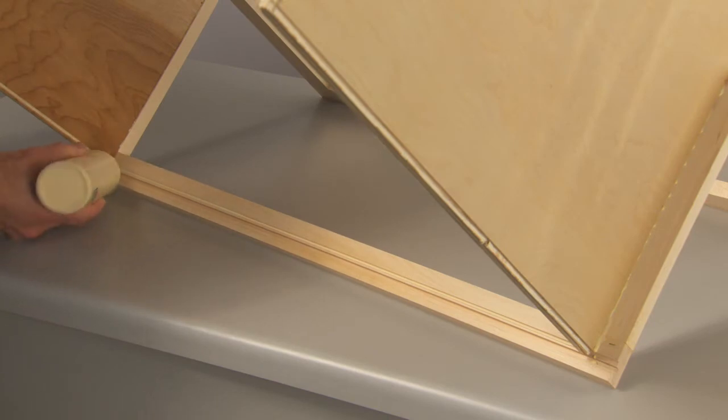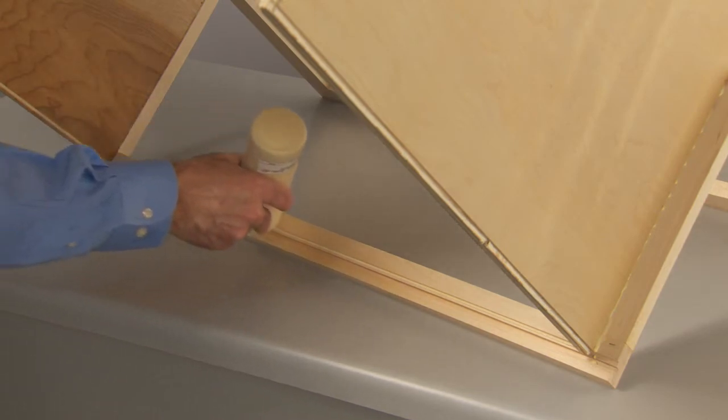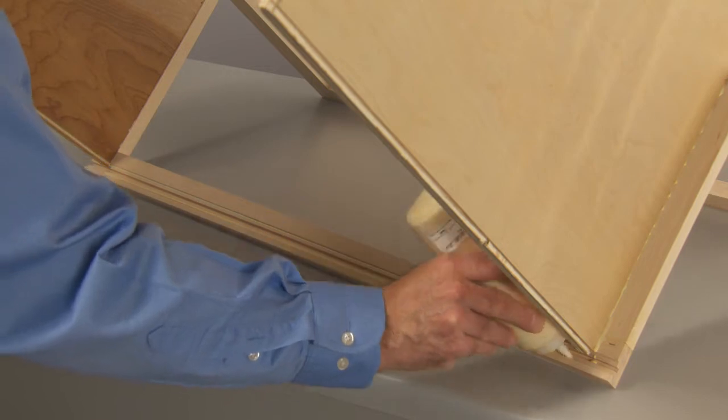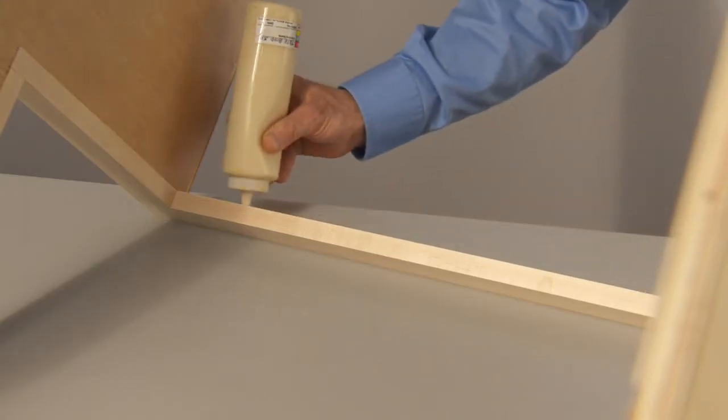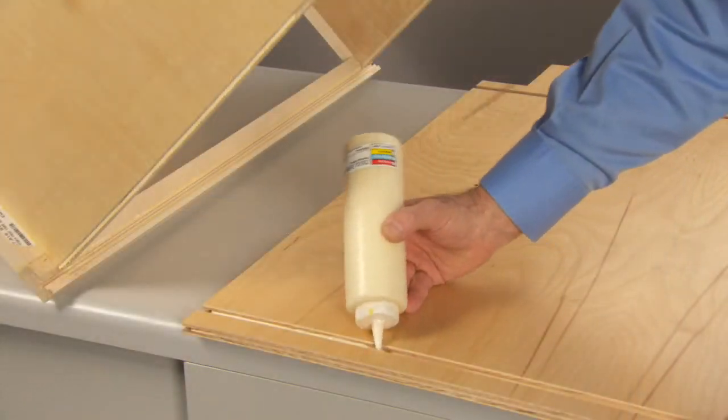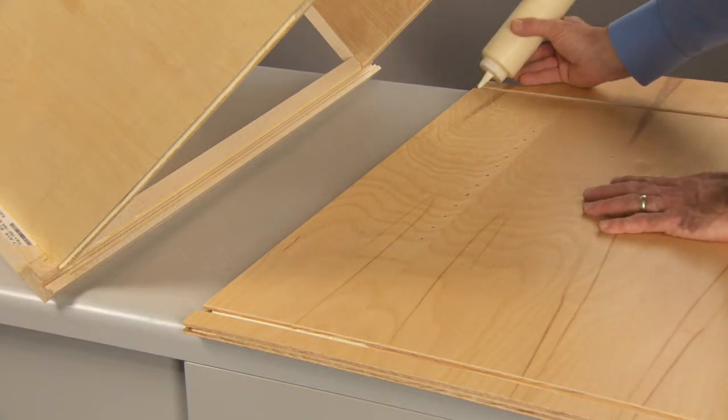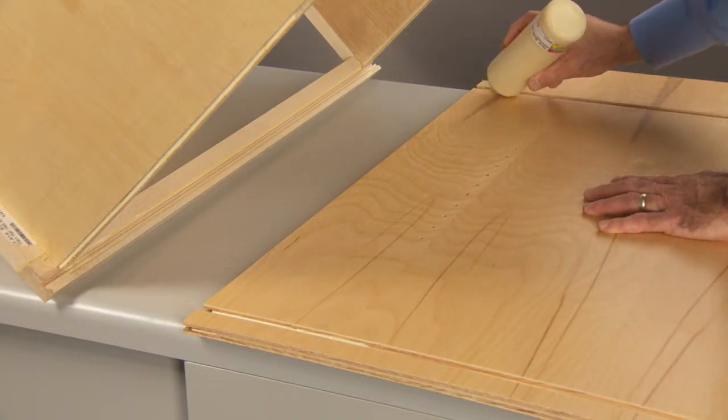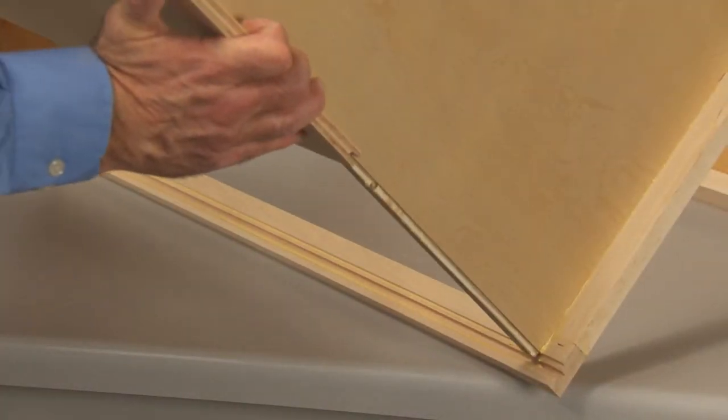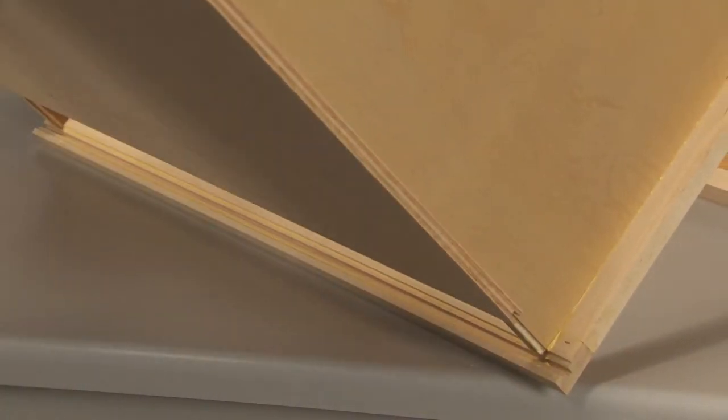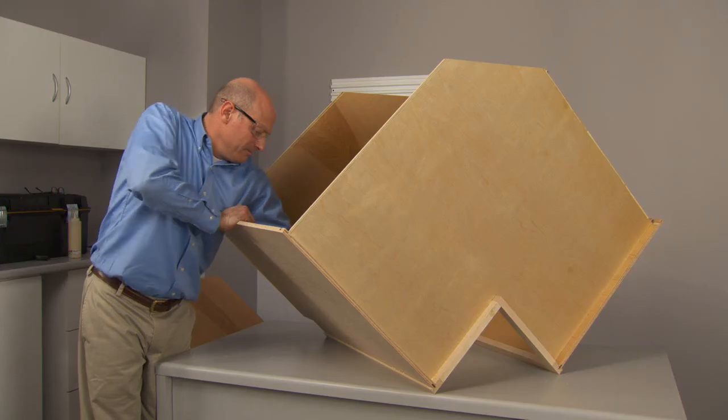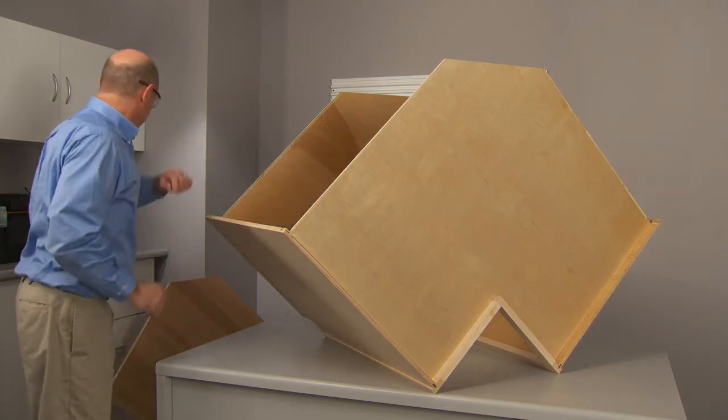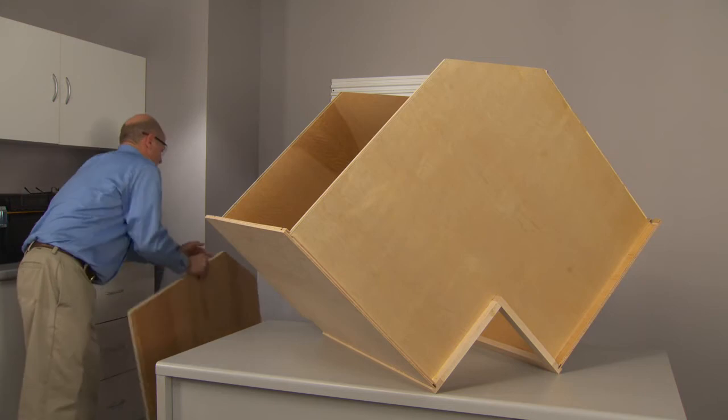Apply glue to both sides of the spline grooves in the styles of the front frames. You'll also apply glue to the female dovetails of the sides. Slide the sides onto the male dovetails of the top and bottom. The splines in the sides will seat securely in the front frame grooves.